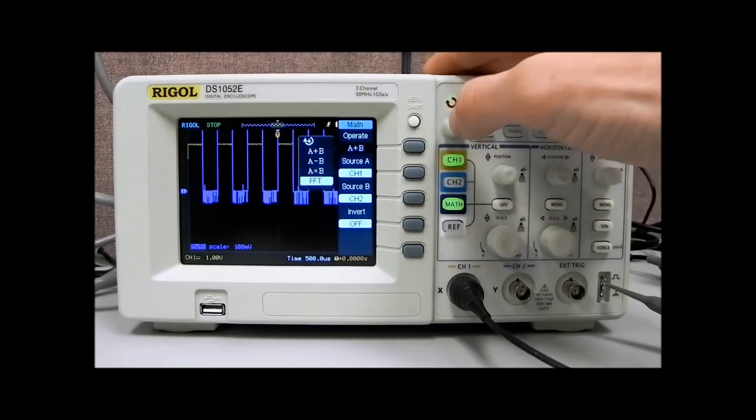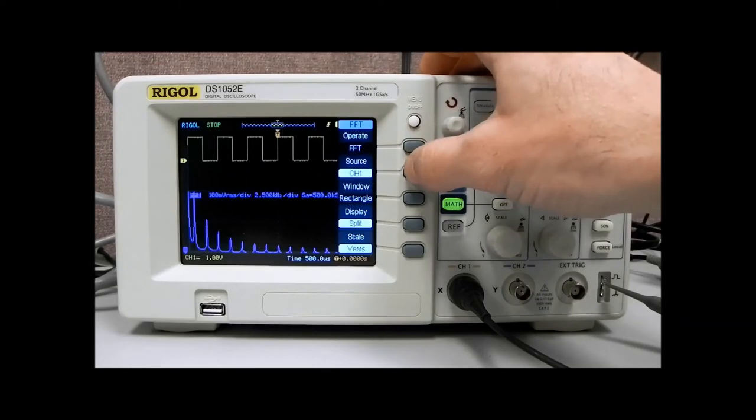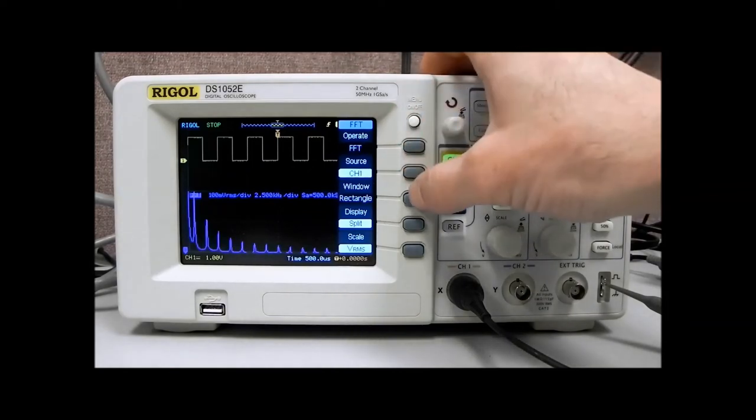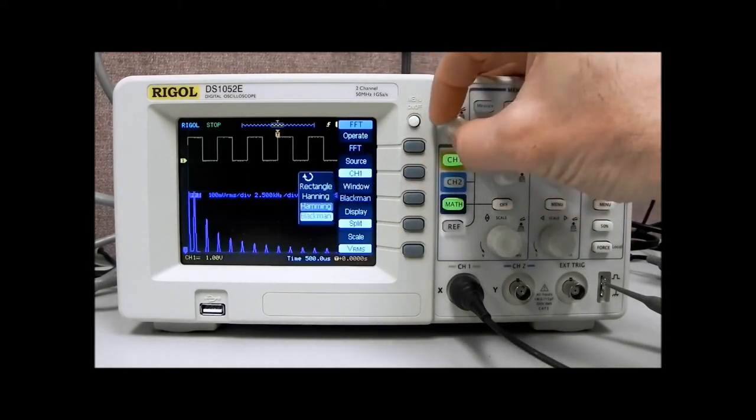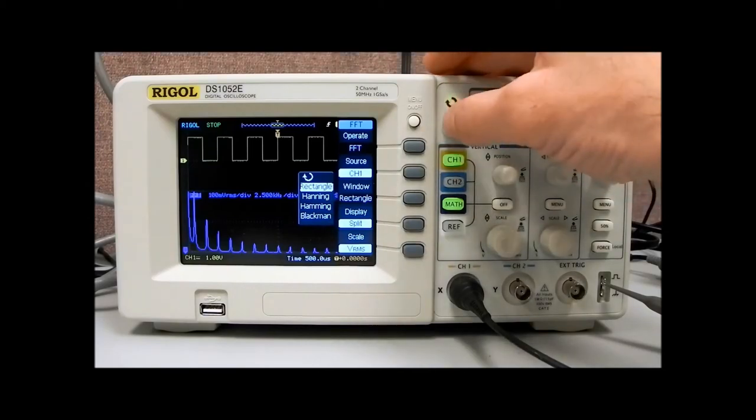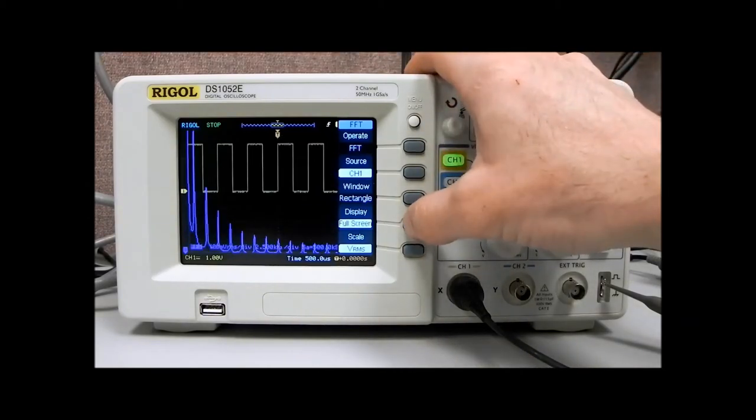So we can do a fast Fourier transform analysis of that incoming waveform and break it down into its frequency components. Let's select FFT. Again, we can select channel 1, channel 2, we have different window options available to us. We're going to stay with rectangle. And we can split the view, so we can enable a larger screen display.